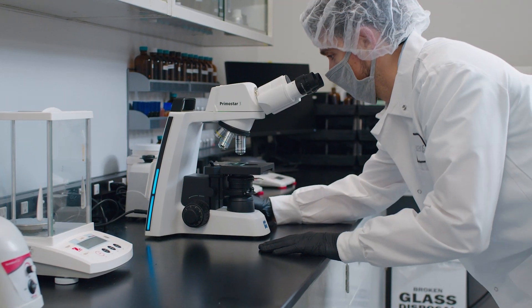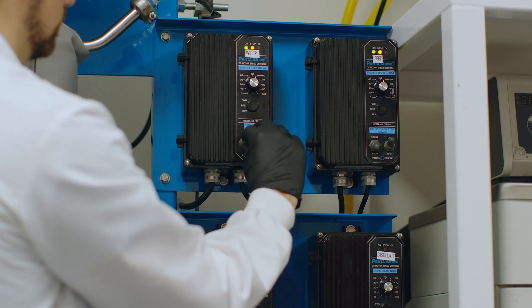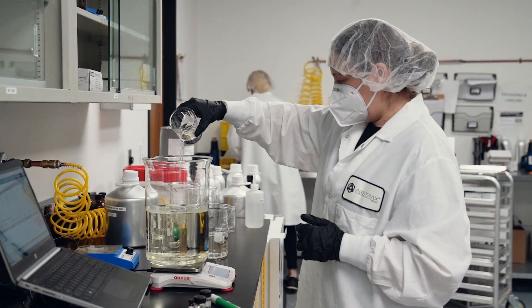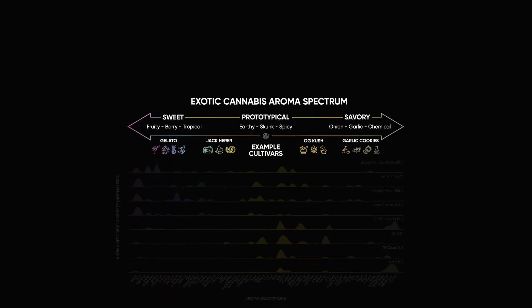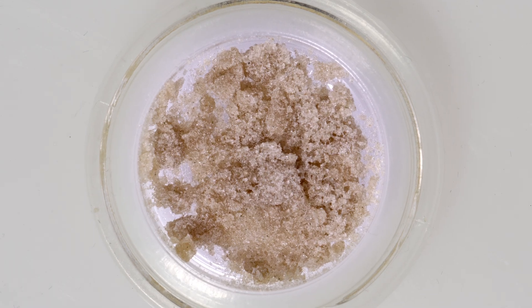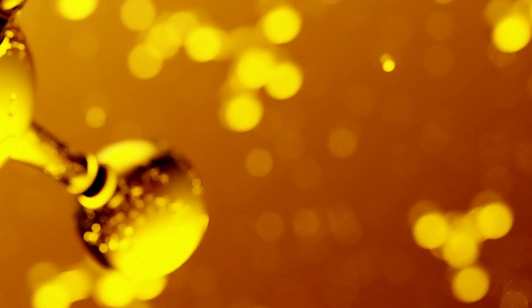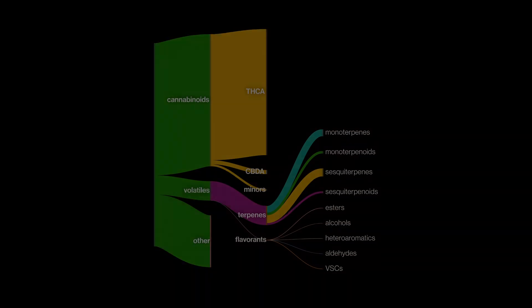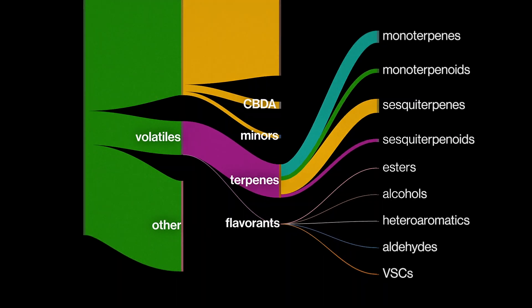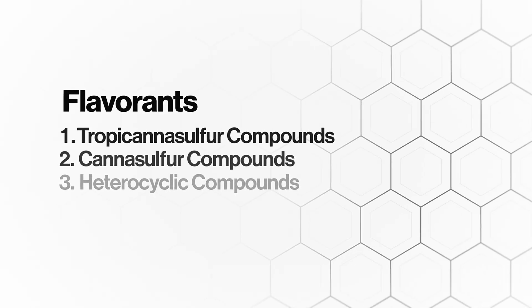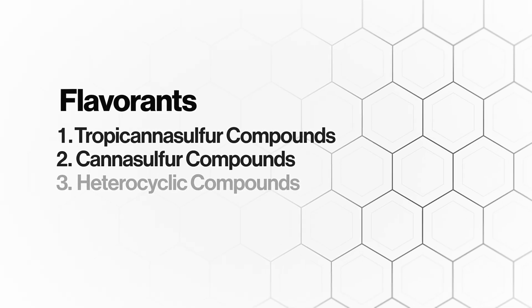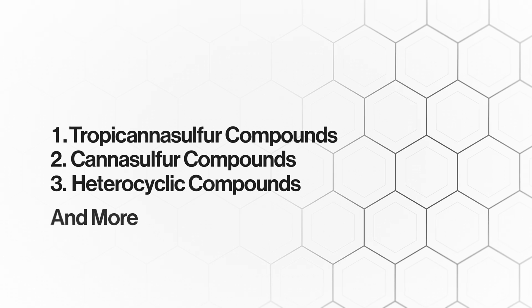The scientists at Abstract studied hash rosin and discovered far more depth than previously captured. Their work centered around expanding the map of cannabis chemistry. They used hash because of its ability to preserve flavor and aroma. Through this, they discovered an entirely new category of molecules in cannabis called flavorants. They identified at least three new flavorant classes, including tropocanisulfur compounds, canisulfur compounds, heterocyclic compounds, and more.